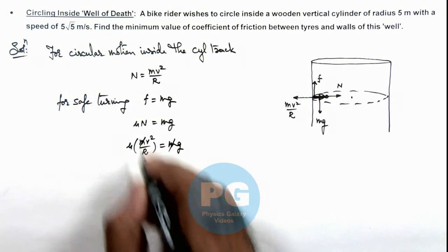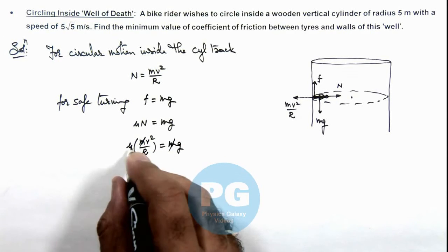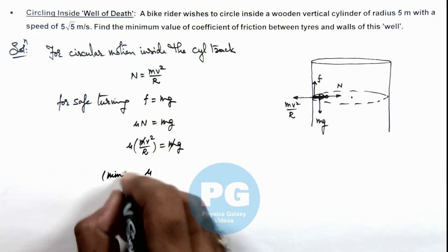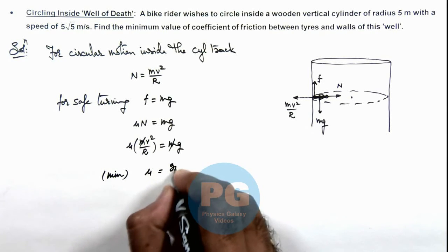That is equal to m g. Here m gets cancelled out and the value of minimum friction coefficient which we'll get for safe turning is equal to...